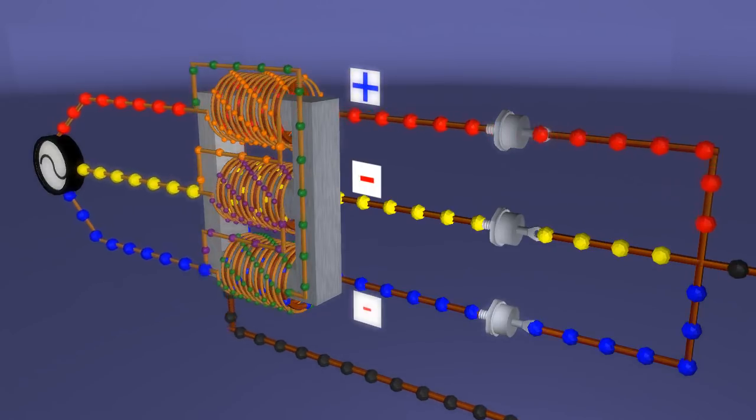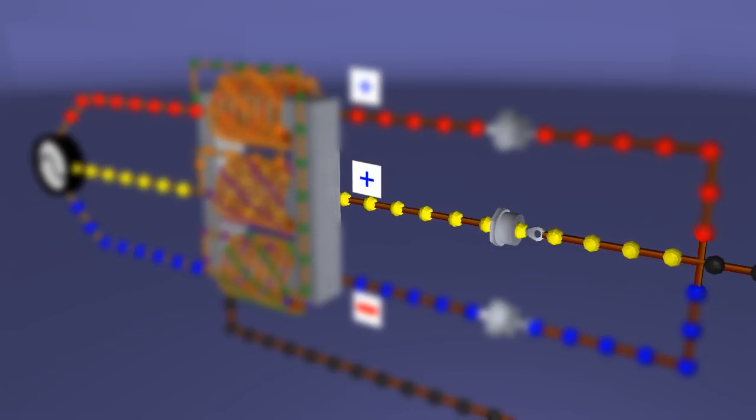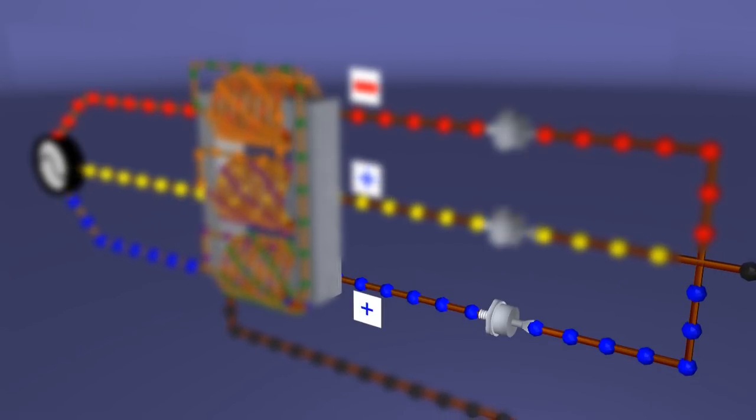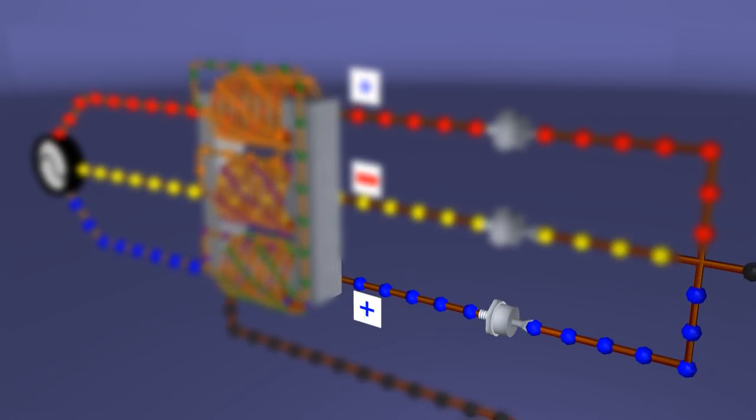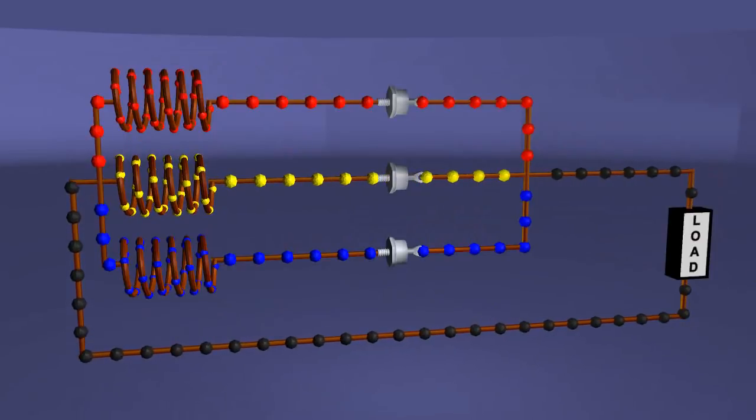During maximum value of voltages of Y phase and B phase, other two diodes conduct in a similar manner. In this way, because of the presence of diodes in each phase of the secondary winding, the current in each phase flows in forward direction through the load.